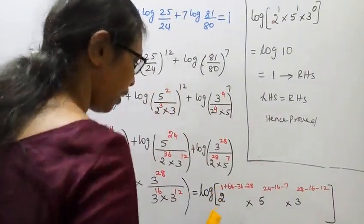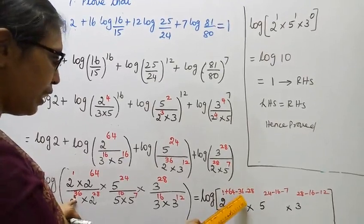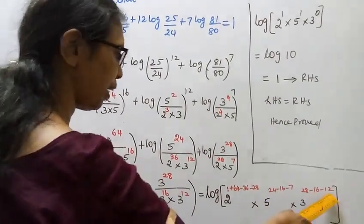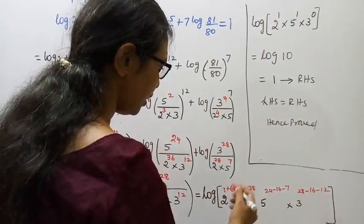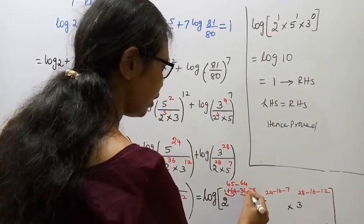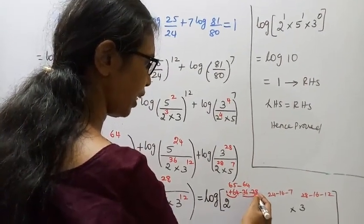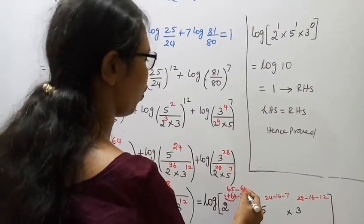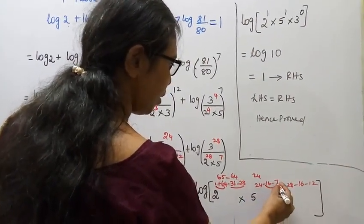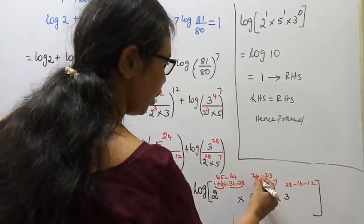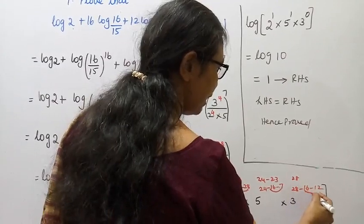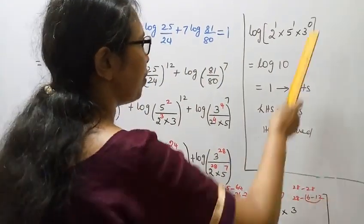Now simplifying exponents by multiplication and division: For base 2: 1 + 64 - 36 - 28. For base 5: 24 - 16 - 7. For base 3: 28 - 16 - 12. So we get: 2 power (1 + 64 - 36 - 28), 5 power (24 - 16 - 7), 3 power (28 - 16 - 12). Calculating: 1 + 64 = 65, minus 36 minus 28 = 1. For 5: 24 - 23 = 1. For 3: 28 - 28 = 0.